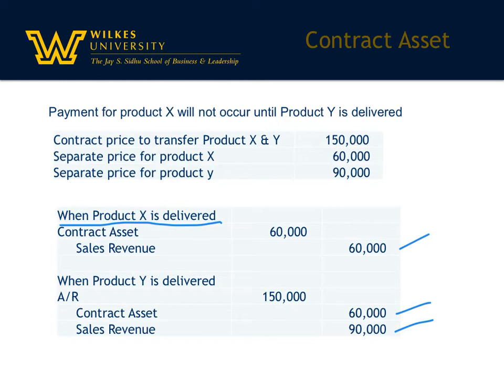So remember, on conditional contract assets you have two pieces: the earning of the revenue, and the ability to receive the consideration — the accounts receivable. And that's that journal entry.